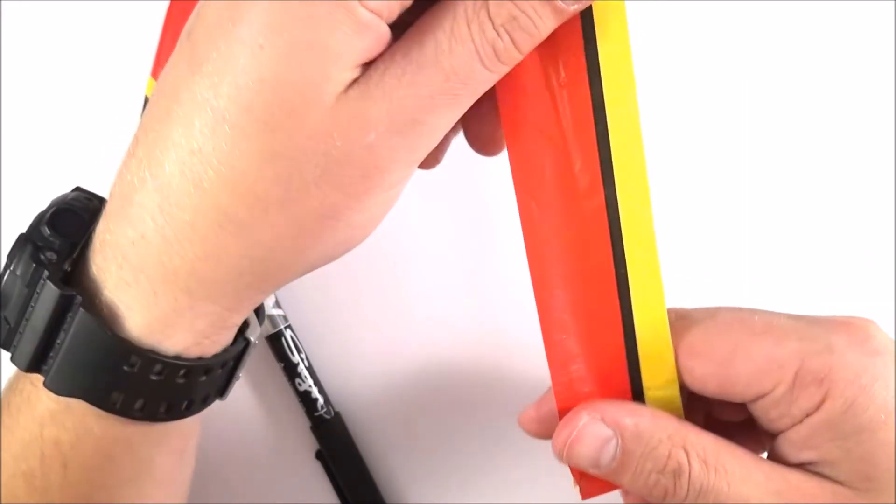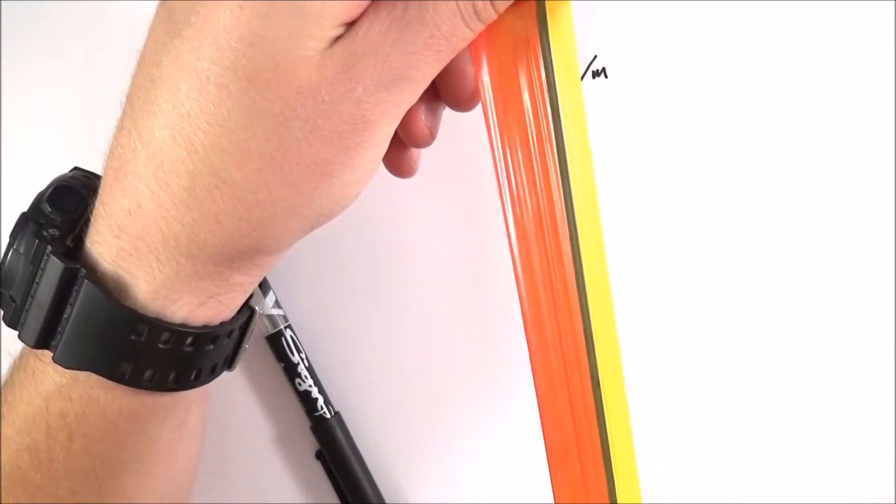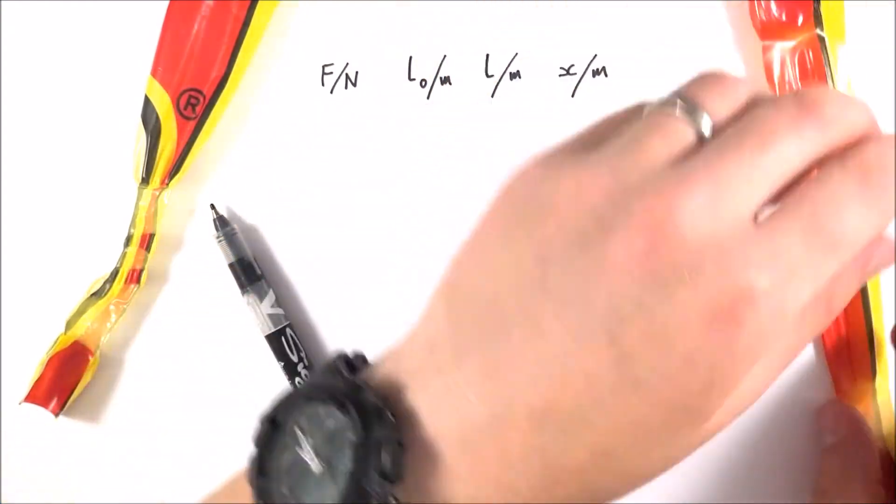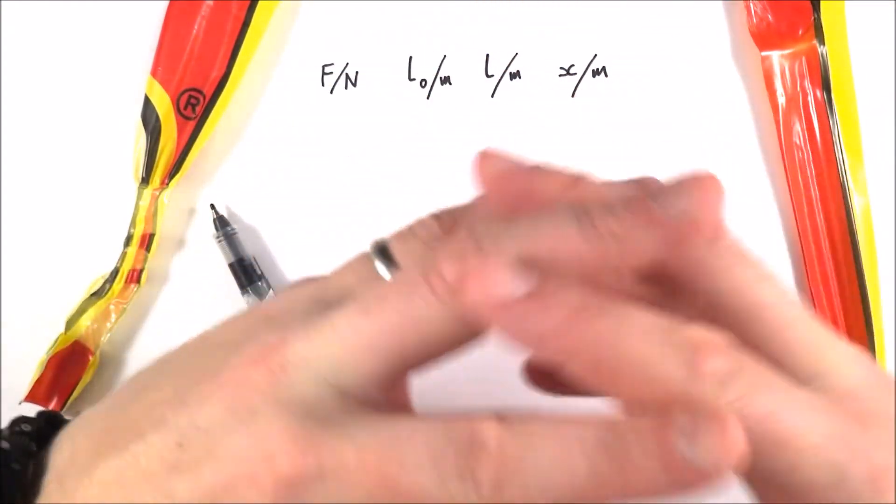You can do the same thing again for your other sample, and what you might find is it behaves in maybe a different way. Then you can think about why that is, what's actually happening to the long chains of polymer molecules inside.